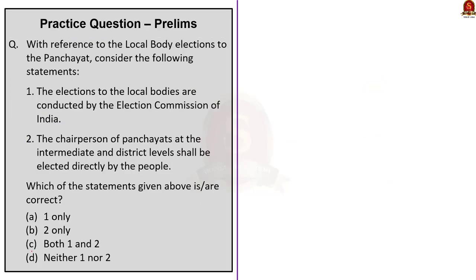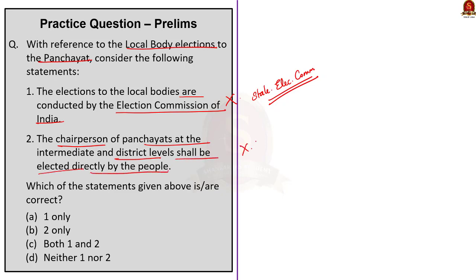Third question: With reference to local body elections to the panchayat, consider the following statements. Statement one says elections to local bodies are conducted by the Election Commission of India — this is incorrect, they are conducted by the respective state election commissions. Statement two says the chairman of panchayats at intermediate and district levels shall be elected directly by the people — this is also incorrect. Members at all levels are directly elected, but chairmen at intermediate and district levels are elected indirectly by and from amongst elected members. The chairperson at village level is elected as the state legislature determines. Correct answer is option D, neither one nor two.